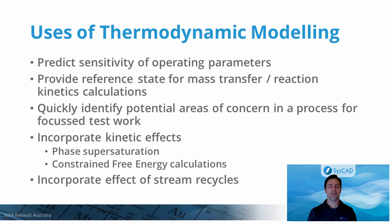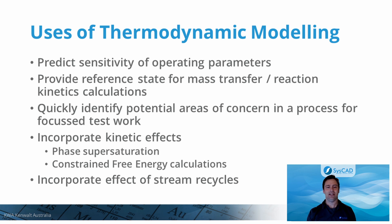Thermodynamic modeling alone does not consider process kinetics. This is an important limitation that affects how model results should be interpreted and used for process design. Some examples of appropriate use of thermodynamic modeling include understanding process sensitivity on operating parameters, providing a reference state for mass transfer and reaction kinetics calculations to understand deviation of a process from equilibrium, and identification of potential areas of concern where more test work is required. SysCAD with the TCE add-on allows modeling of kinetic effects through phase supersaturation and constraint-free energy algorithms. A key advantage of using SysCAD with the TCE add-on compared to standalone thermodynamic calculations is that the effects of process recycle streams can be incorporated. SysCAD can easily incorporate any number of nested recycle loops.